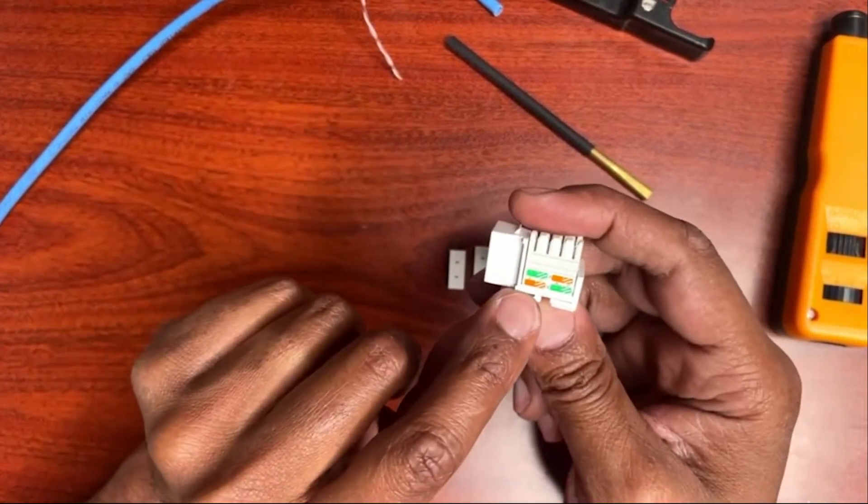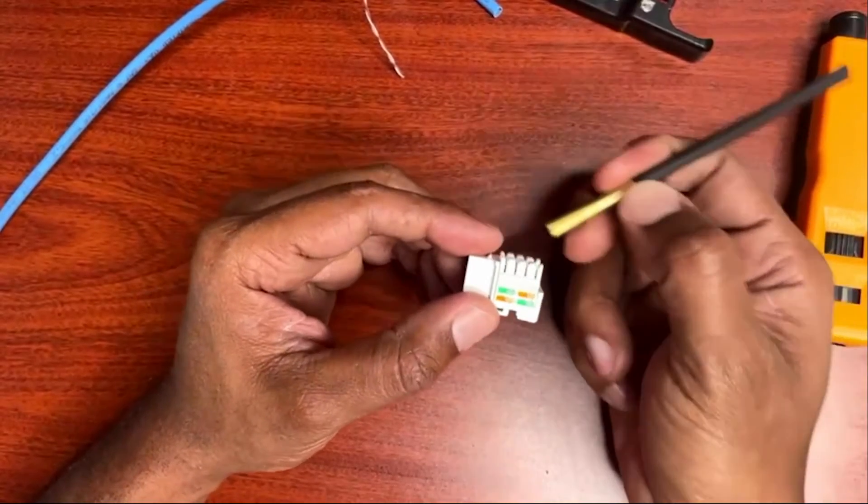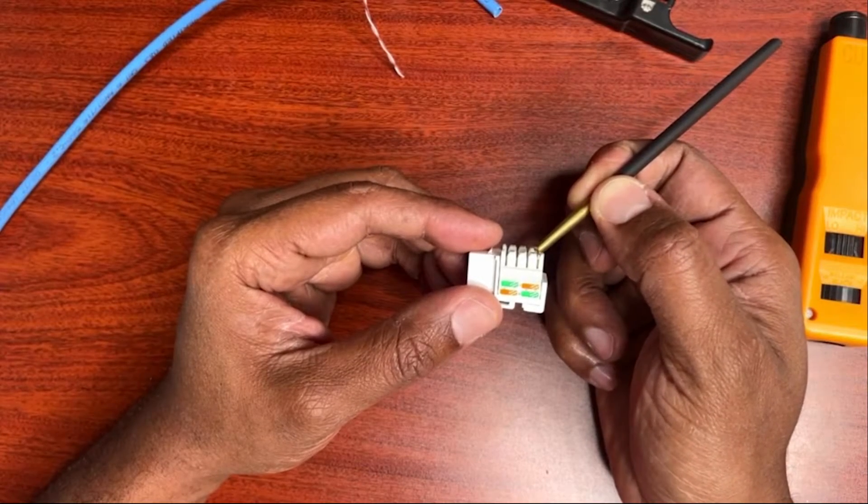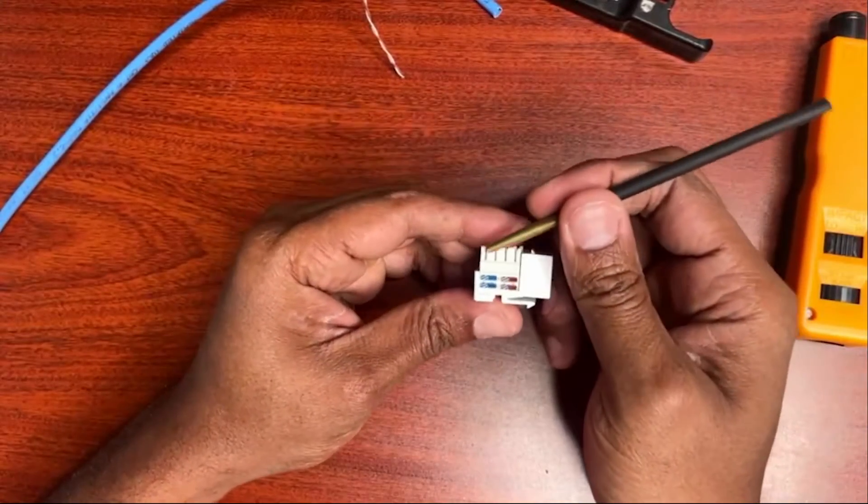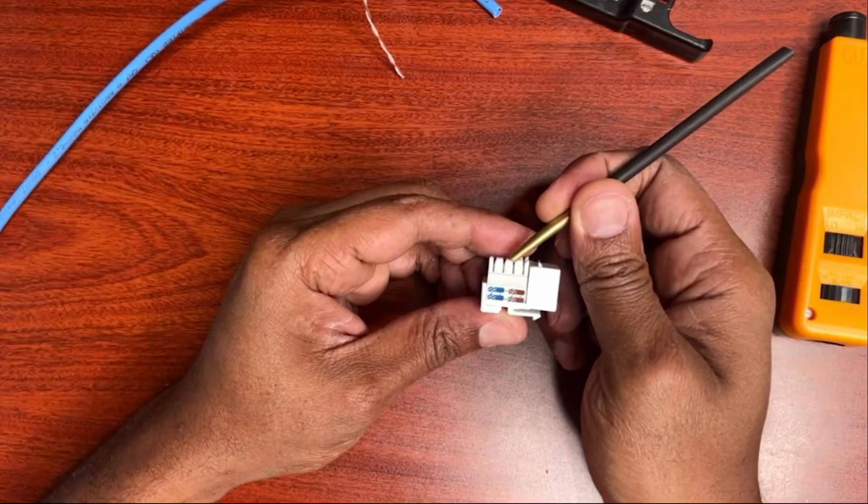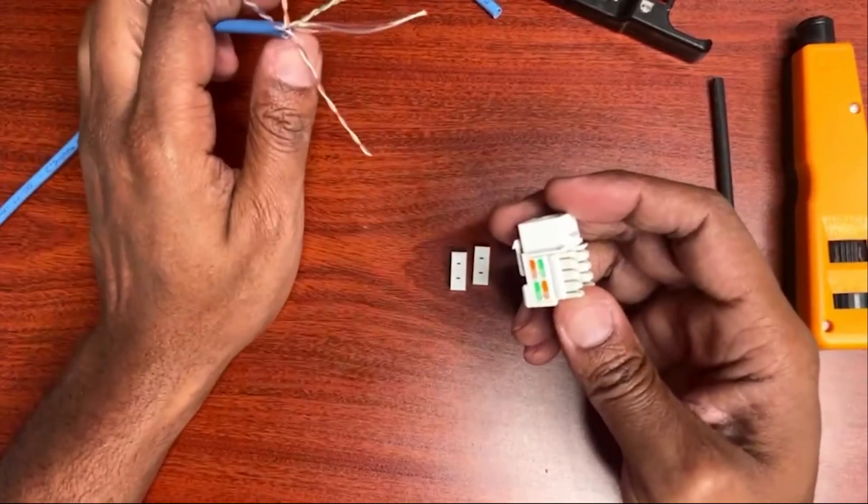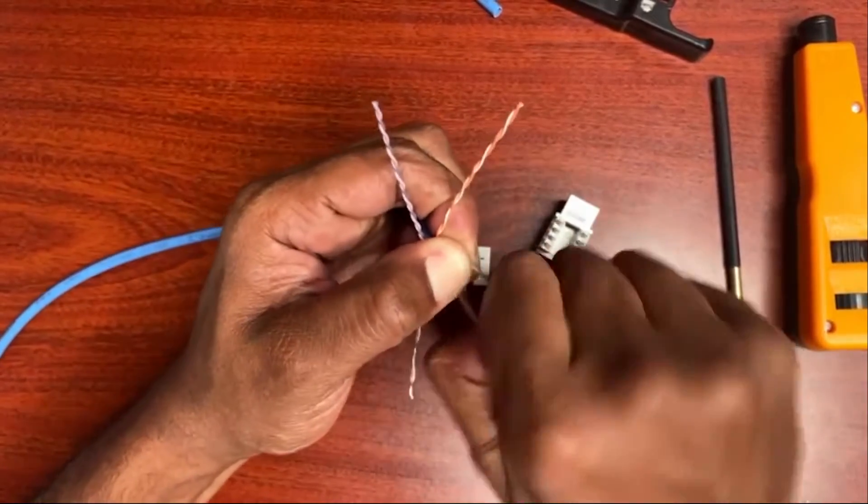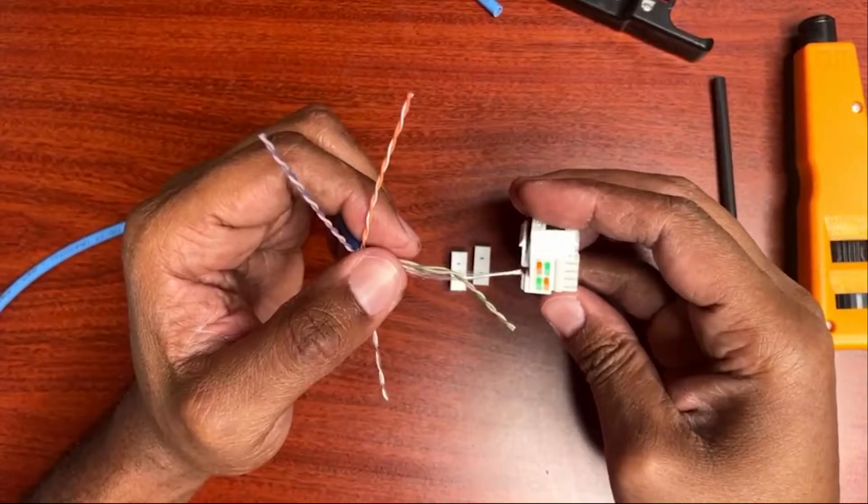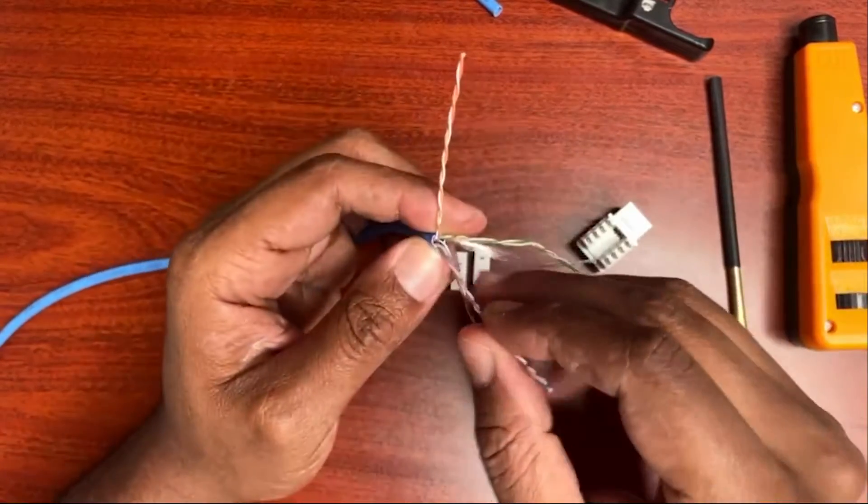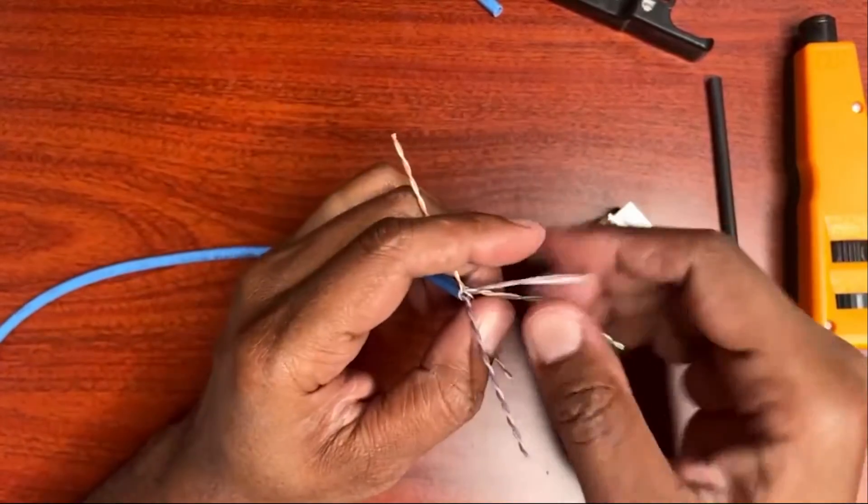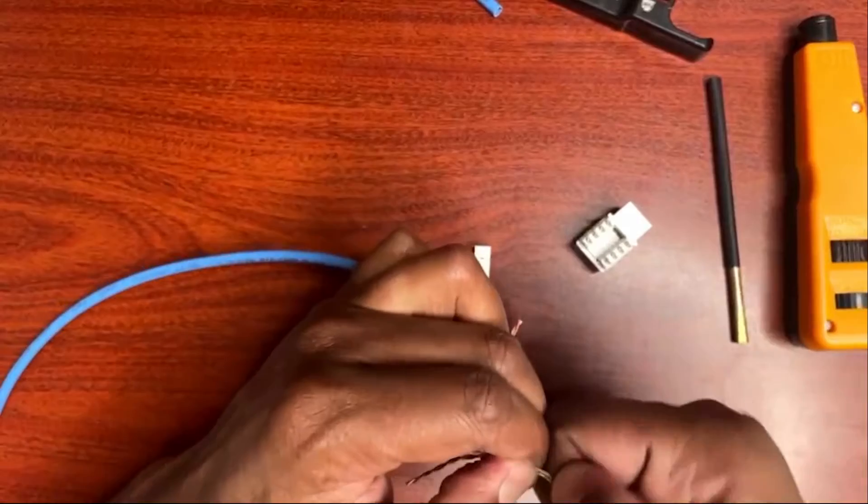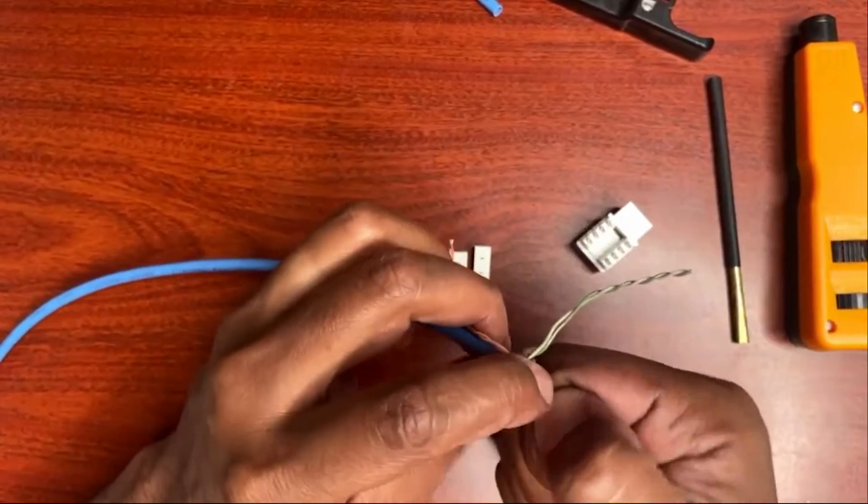The bottom side I'm going to be doing B, so what this means is you have your orange, orange white, green, green white, and then on the other side we'll have blue white blue, brown white brown. So let's get our colors together. I'm going to do an old school method. I have my green untwisting towards the bottom, and I'm going to have my blue right here.